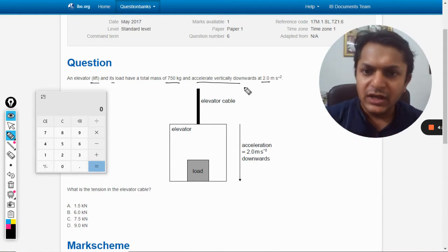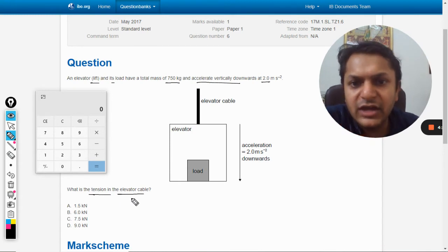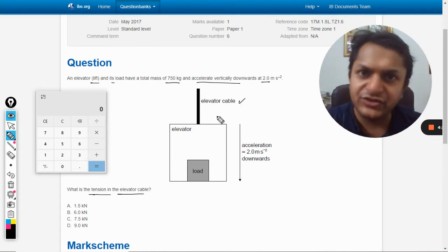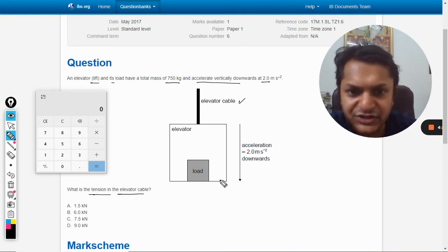The question is: what is the tension in the elevator cable? So this is the elevator cable, and what is the tension there? The total weight is 750 kg, so there will be tension in the upper direction.